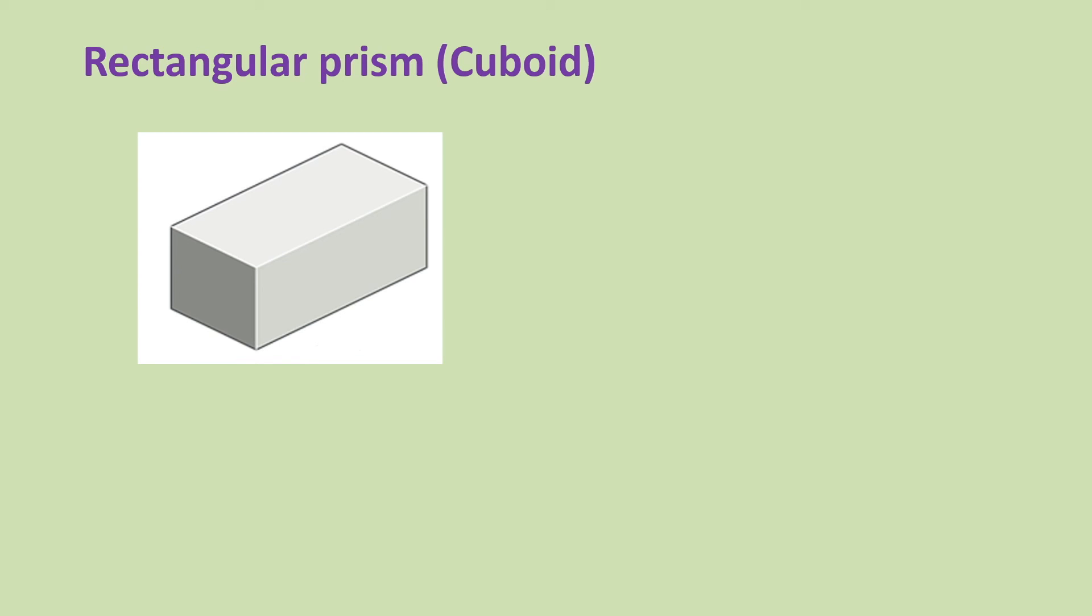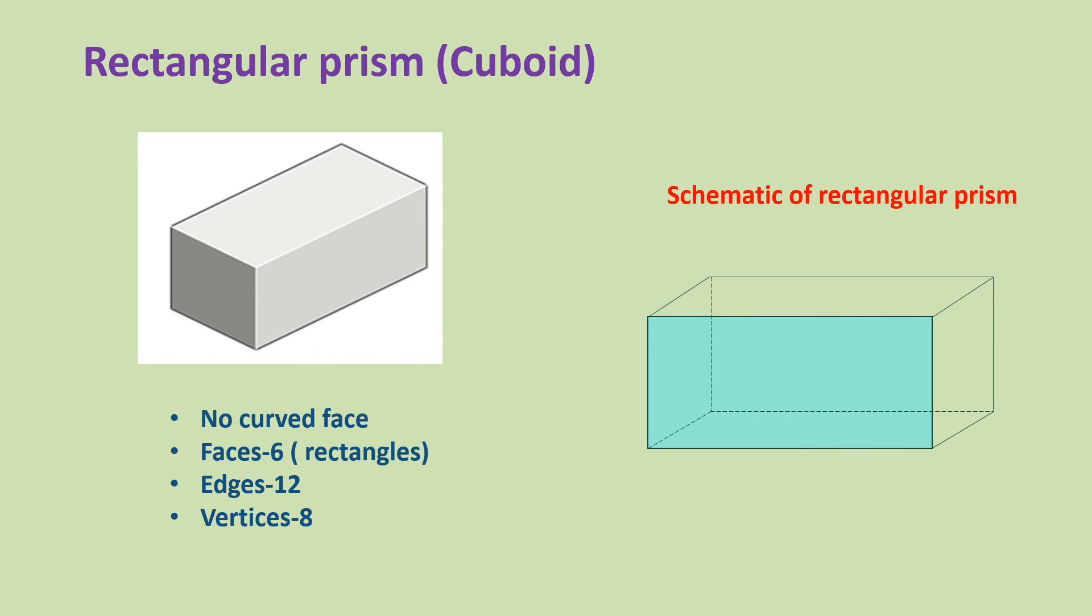It is also called cuboid. There is no curved face in rectangular prism, but there are six faces which are rectangle in shape. It has twelve edges and eight vertices.